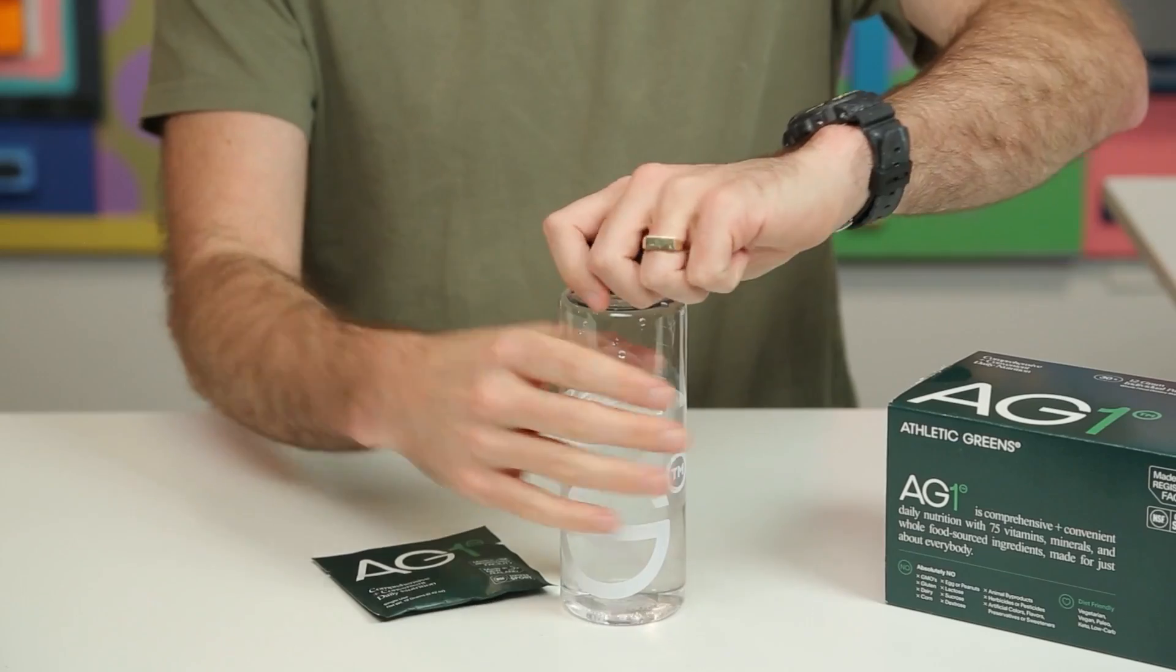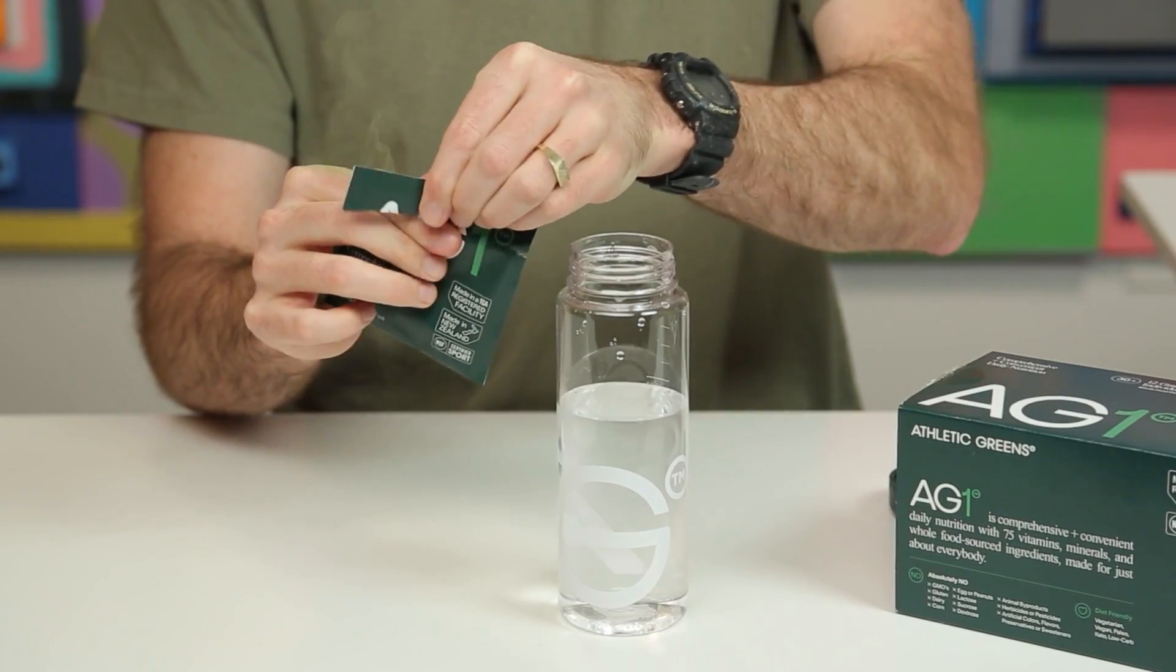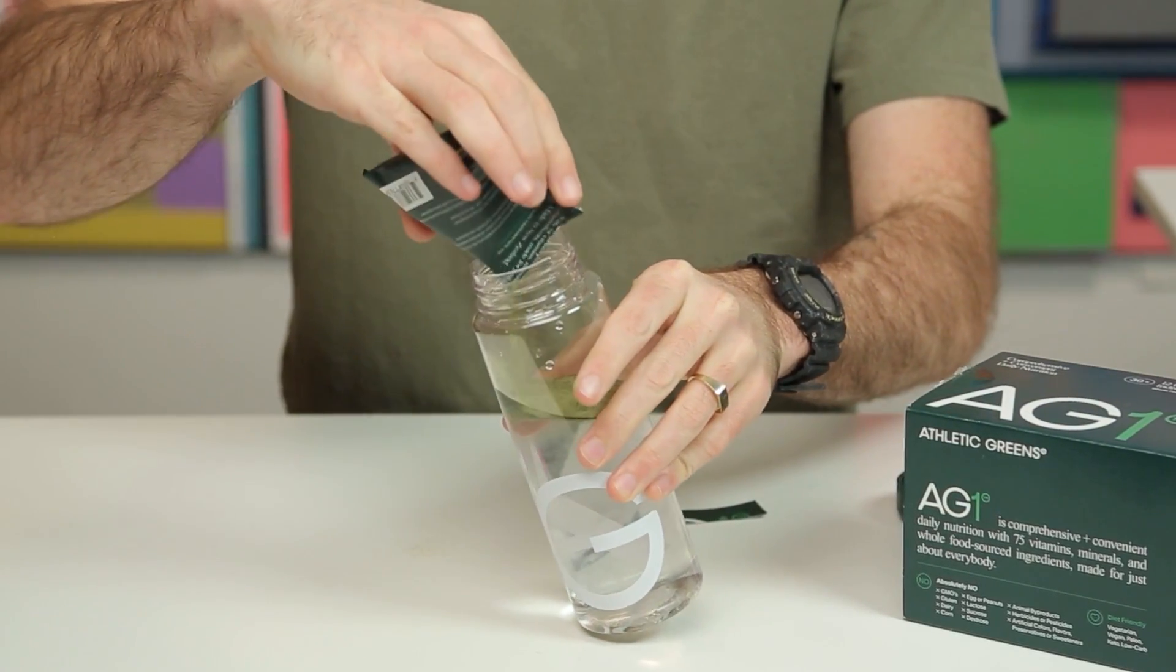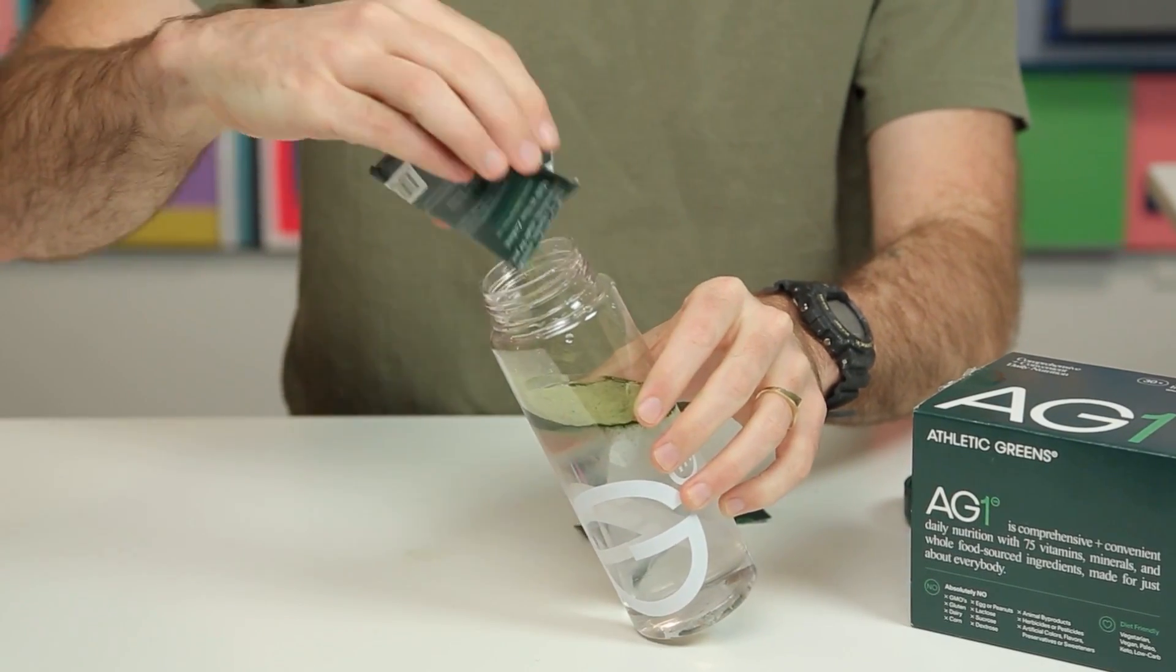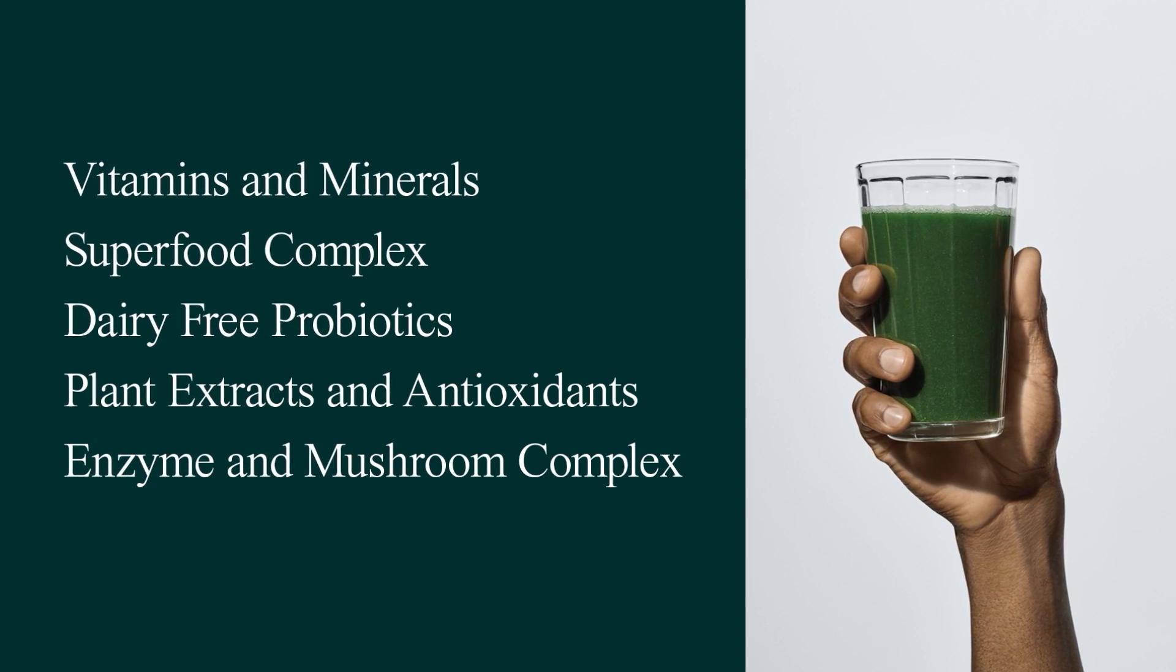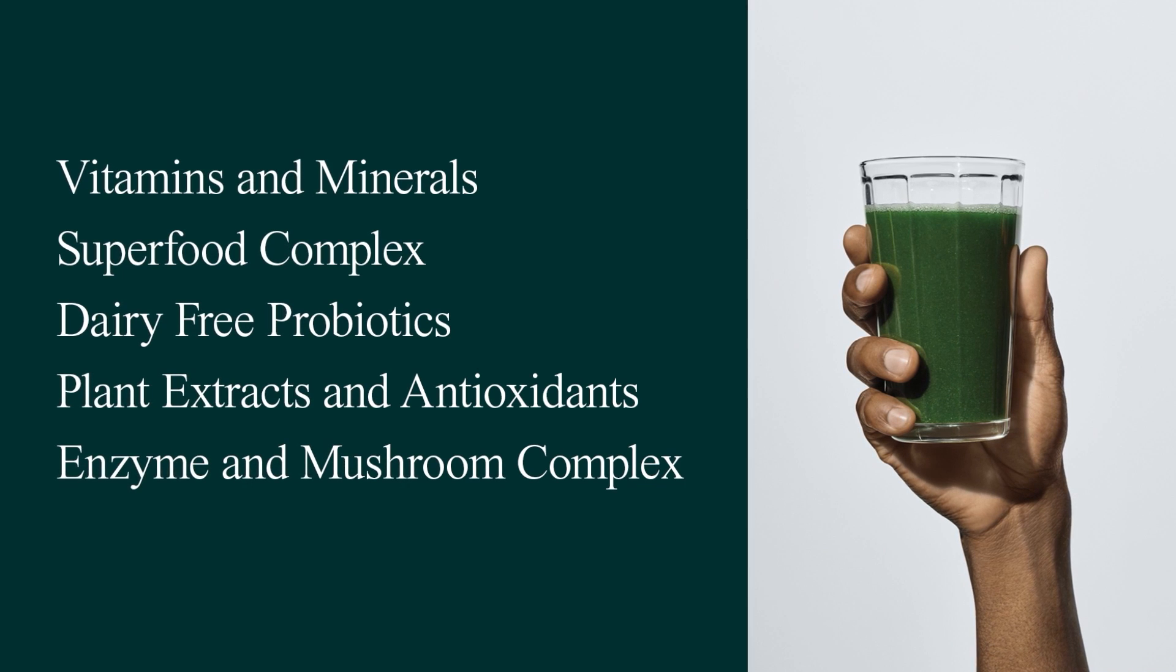And Athletic Greens is offering a free one-year supply of vitamin D and five free travel packs to Wisecrack viewers with their first purchase. It's such a relief to know that my nutrition is taken care of every time I shake up a bottle of AG1 by Athletic Greens. First of all, it couldn't be easier to prepare. All I need is one scoop of powder and eight ounces of water, which is so much easier than making a smoothie or a shake. You just put it in, shake it up, easy to drink. And honestly, it tastes really good, better than most green juices you'd buy at the store. And it replaces all the bulky bottles of supplements that took up valuable real estate in my cabinets. There's so much packed into every scoop that it almost blows my mind. Those 75 ingredients I mentioned before also include dairy-free probiotics, adaptogens, antioxidants, and digestive enzymes.